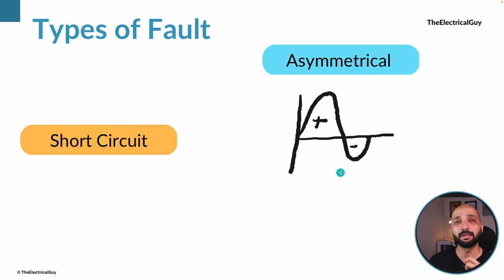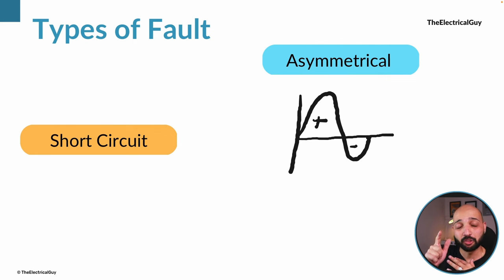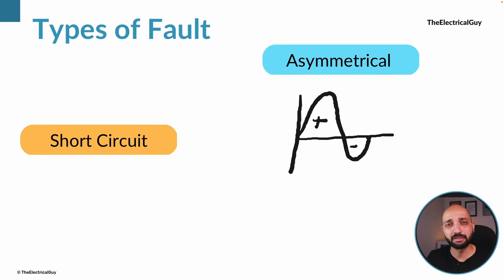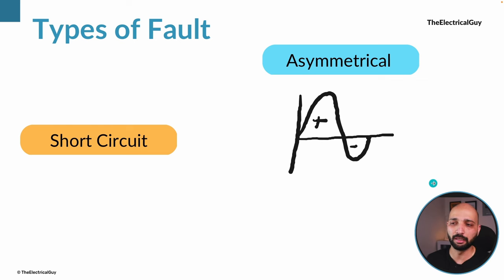In an asymmetrical situation, one cycle will be bigger than the other — the positive half cycle and negative half cycle are not equal to each other, causing asymmetry. This is generally seen where the system is not balanced. Based on this concept of symmetrical and asymmetrical, the faults are classified, which we will see in a few minutes.